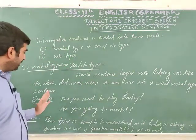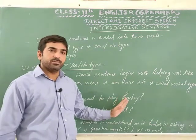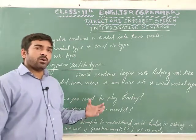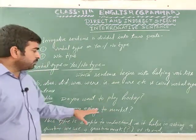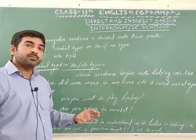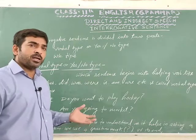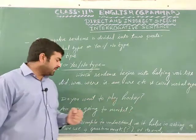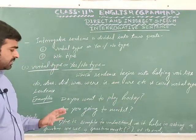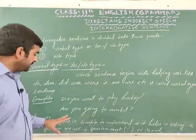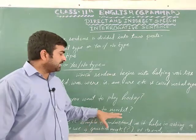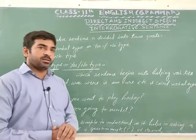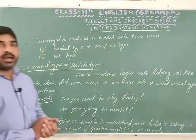For example: 'Do you want to play hockey?' You can give the answer yes or no. Another example: 'Are you going to market?' You can answer yes or no. This type of sentence is simple to understand. Since it helps in asking a question, we use a question mark at its end.